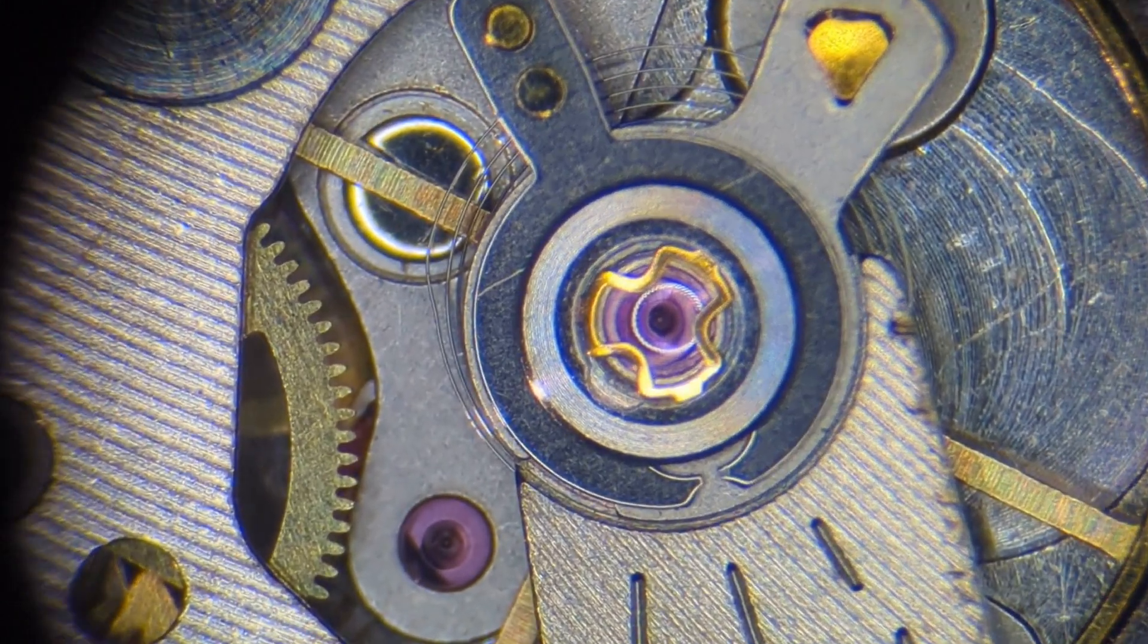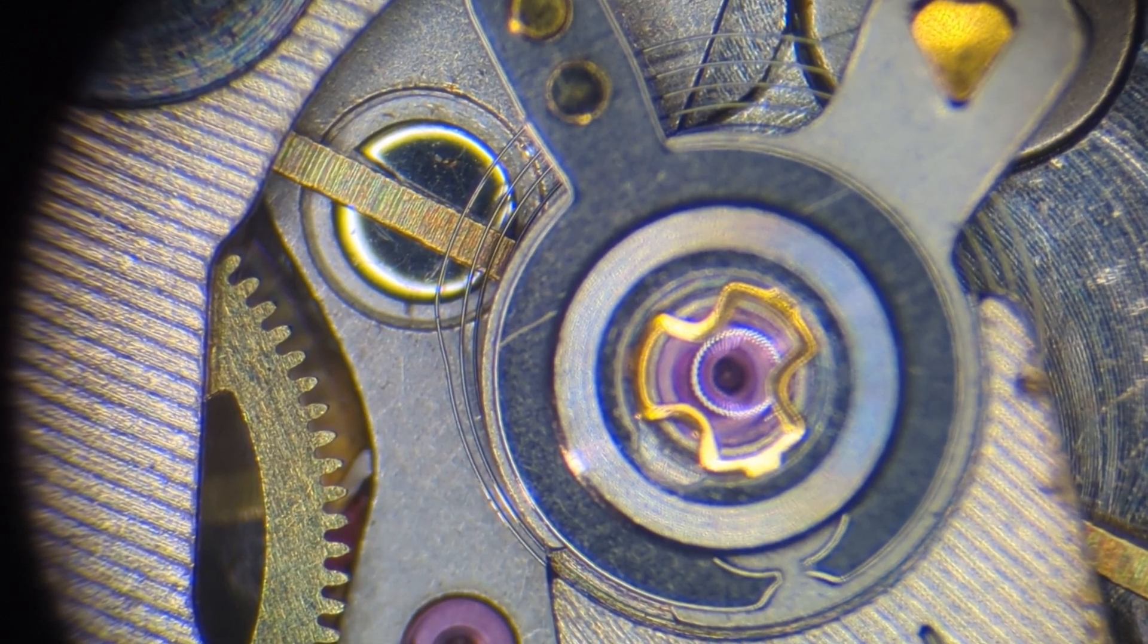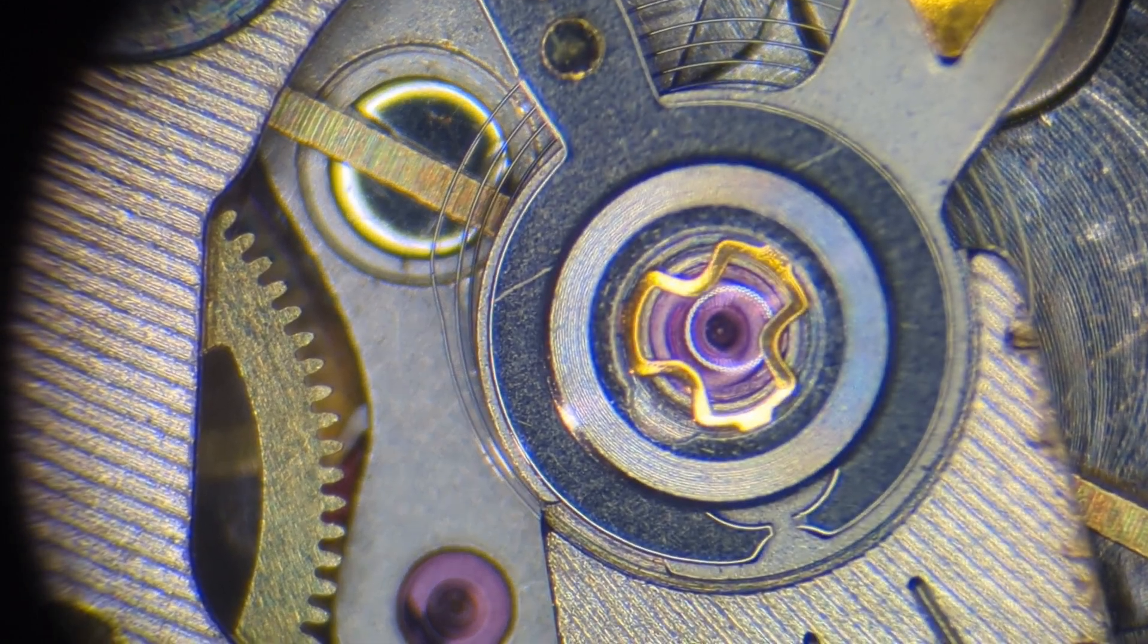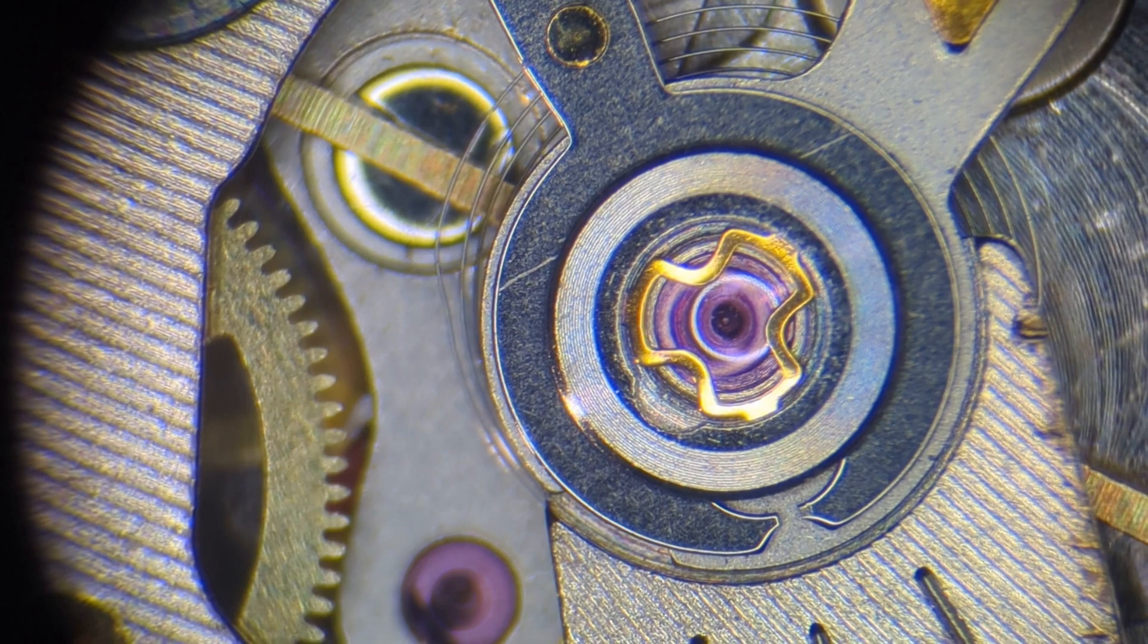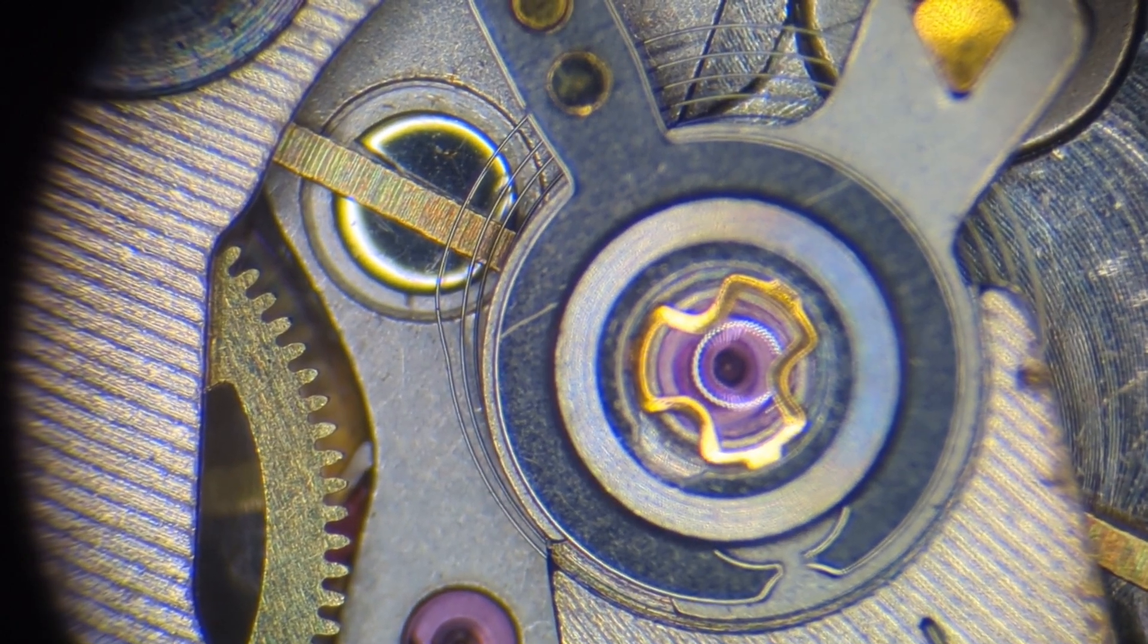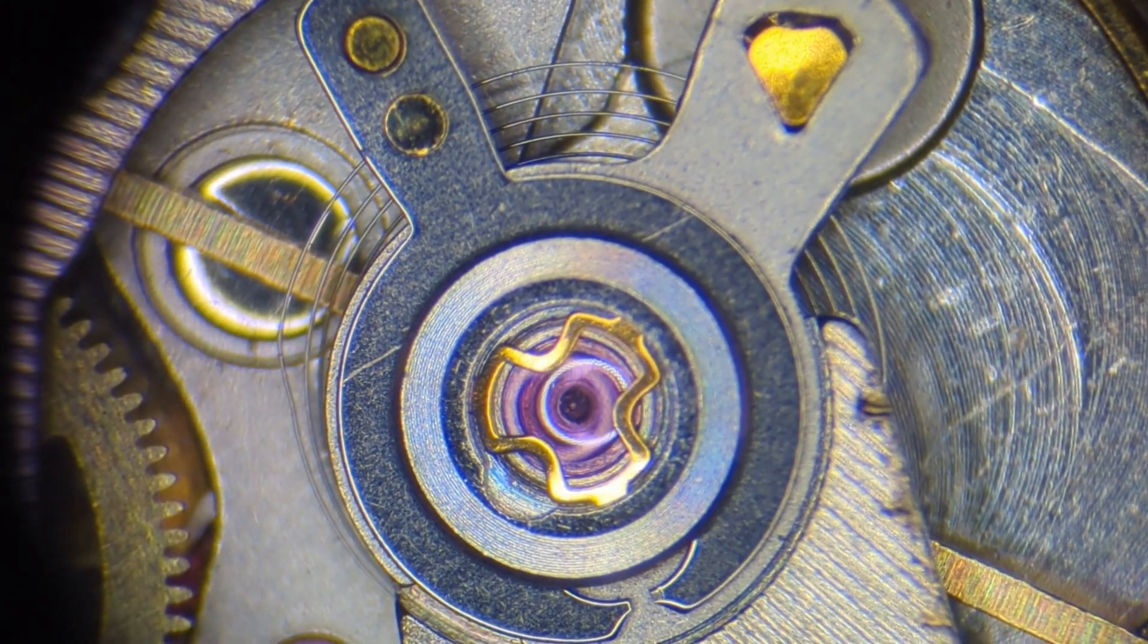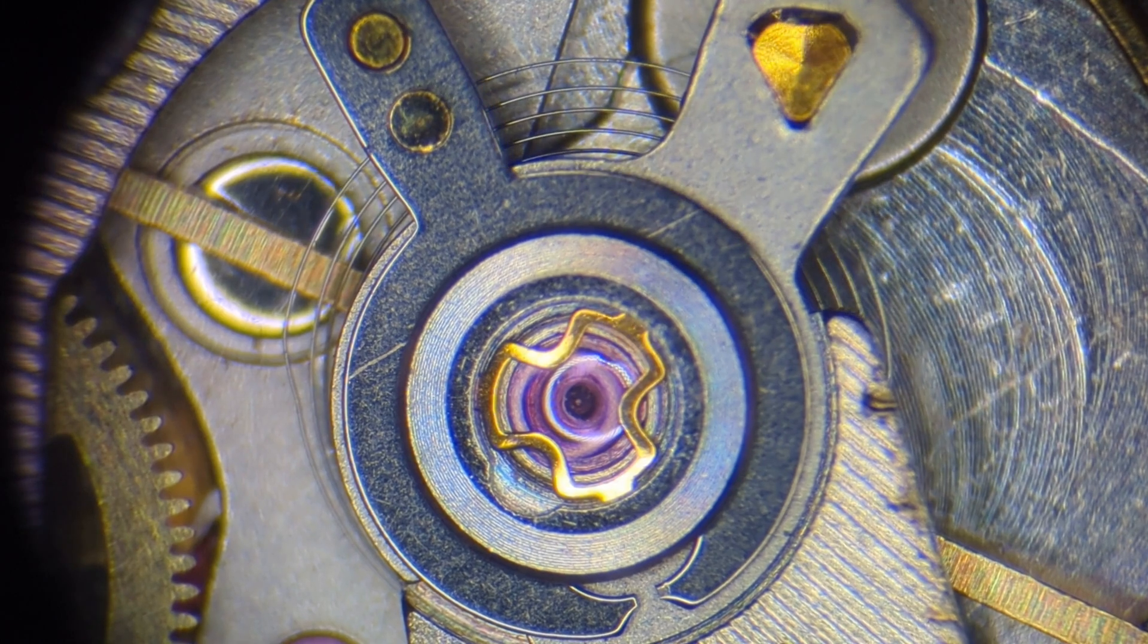I have another video where I showed how to achieve the goal without removing the hairspring from the balance wheel. In this video I don't remove the whole balance wheel assembly from the watch at all. And I thought it might be interesting to show how I did it.